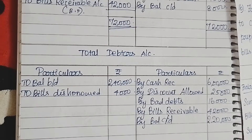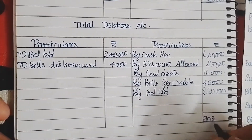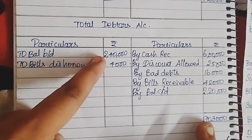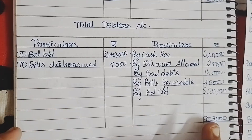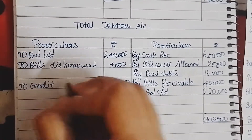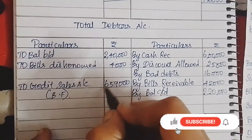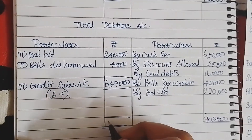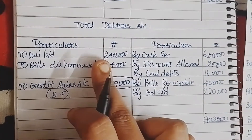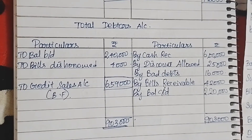So adding the credit side: 2,20,000 plus 42,000 plus 16,000 plus 25,000 plus 6,00,000 equals 9,00,000. Minus the opening balance of 2,40,000 leaves the balancing figure. So to credit sales account — the balancing figure is 6,00,000. That means credit sales equals 6,00,000. Now we will find bills payable.